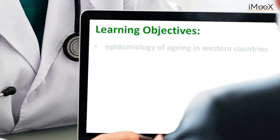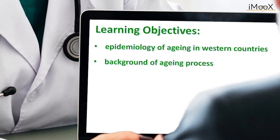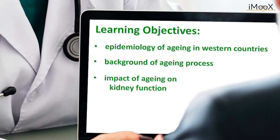You will know the epidemiology of aging in Western countries. You will know about the physiological, molecular and physical background of the aging process in humans. You will be able to explain the impact of molecular and physical aging processes on kidney morphology and function.